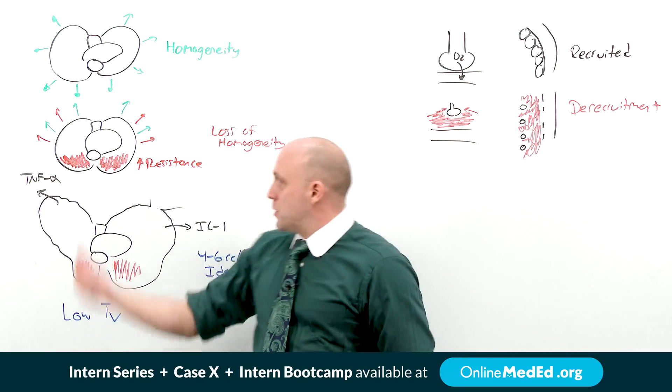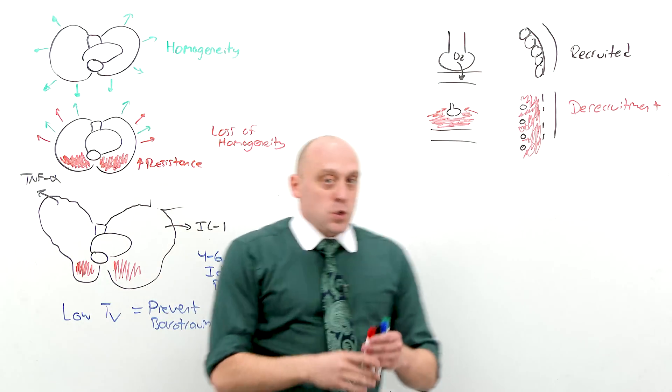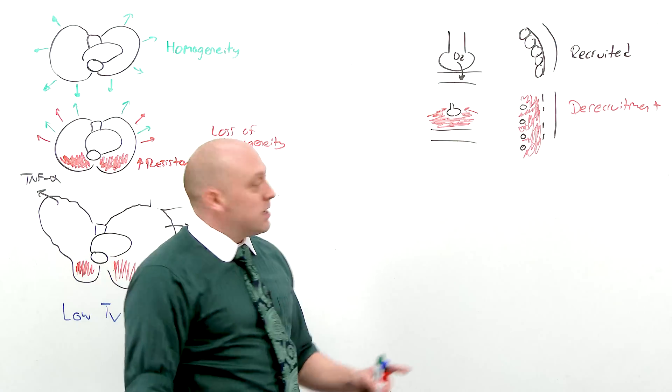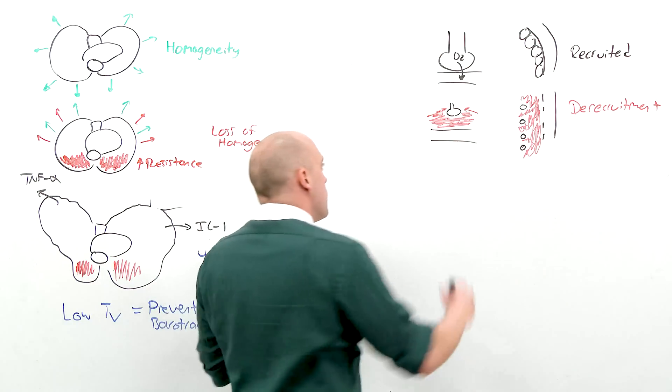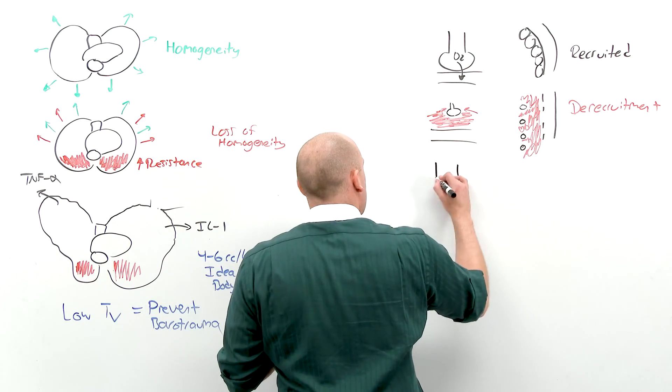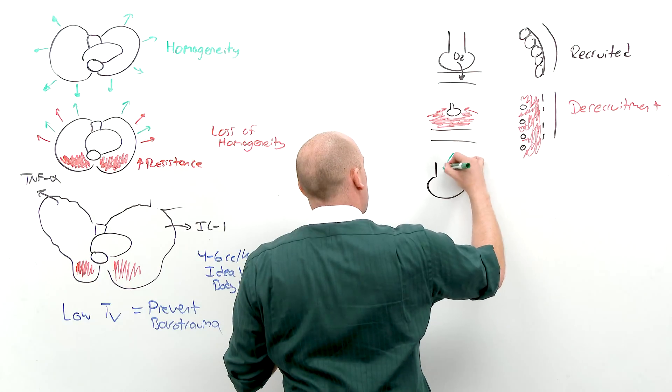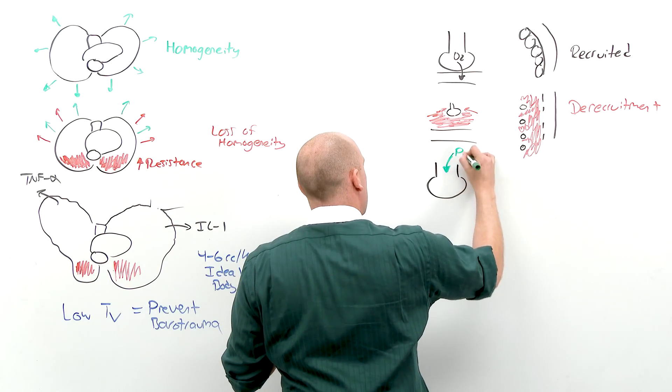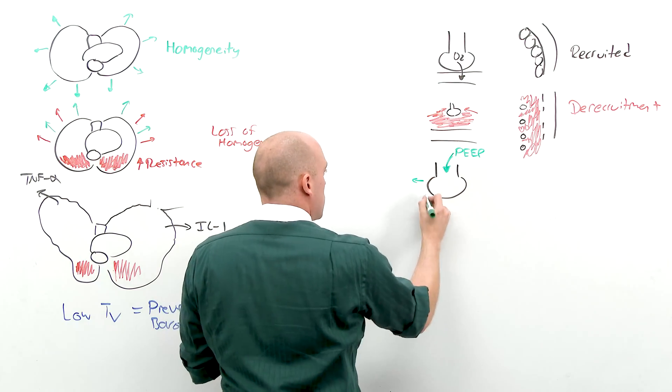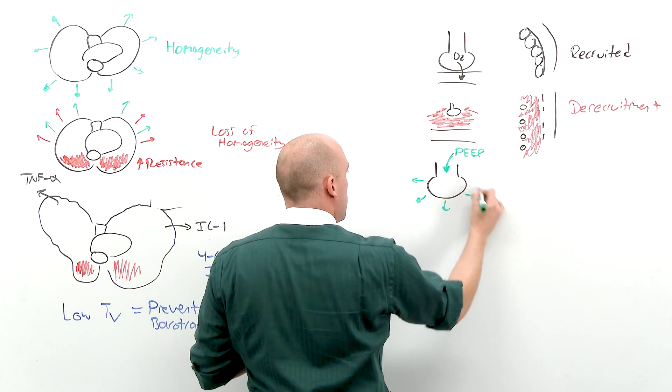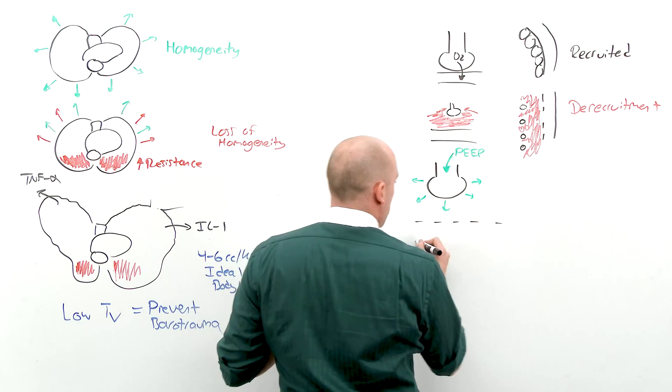So what you have to do, then, is initiate an intervention that prevents derecruitment. Positive end expiratory pressure ensures that there is always pressure in the system. PEEP. Positive end expiratory pressure. Which gives the alveolus the strength to fight back against that fluid.